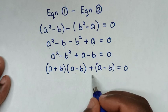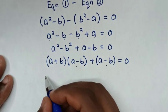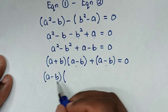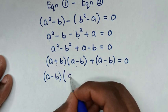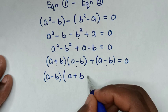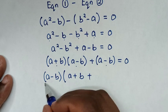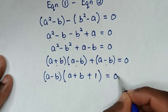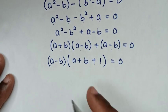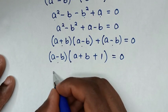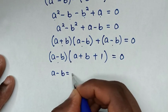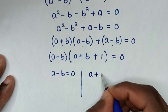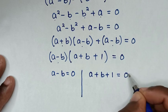From here, A squared minus B squared is in the form of a perfect square, so it will be bracket A plus B, bracket A minus B, then plus bracket A minus B, equal to 0. Then A minus B is common, so we take A minus B out of the bracket: A minus B, bracket A plus B plus 1, equal to 0. We have two solutions: A minus B equals 0, and A plus B plus 1 equals 0.